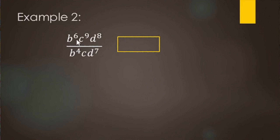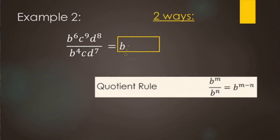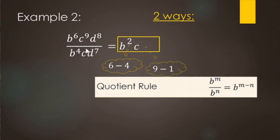Another example: B to the sixth, C to the ninth, D to the eighth over B to the fourth, C, D to the seventh. Using the quotient rule: B to the 6 minus 4 gives B squared. For the C factors, C to the ninth over C (which is C to the first) — doing 9 minus 1 gives C to the eighth. For D to the eighth over D to the seventh, doing 8 minus 7 gives D to the first, and one factor is just written as D.